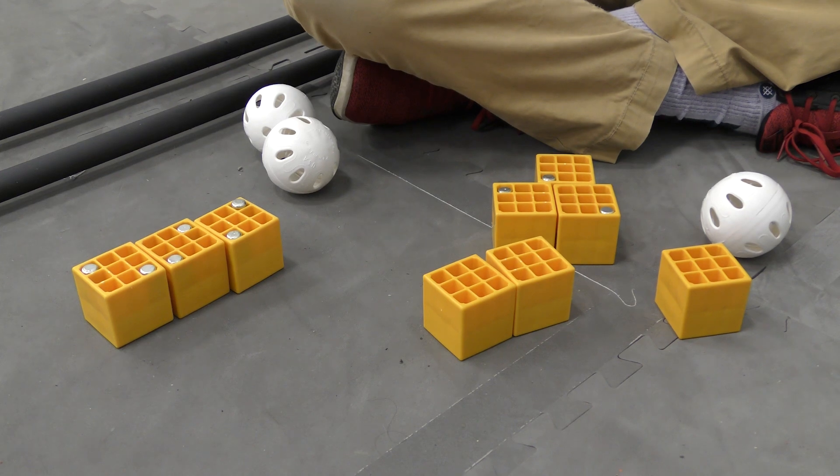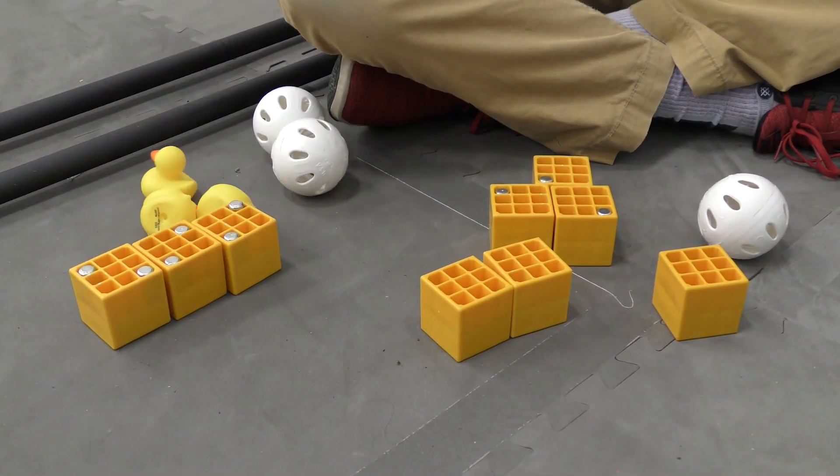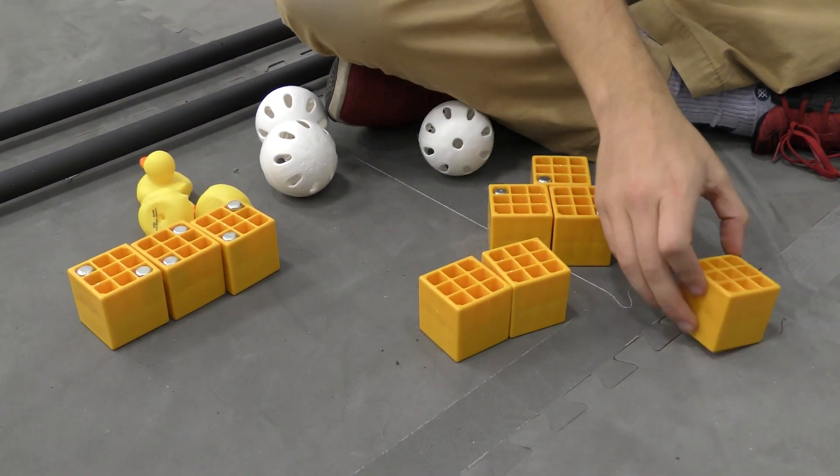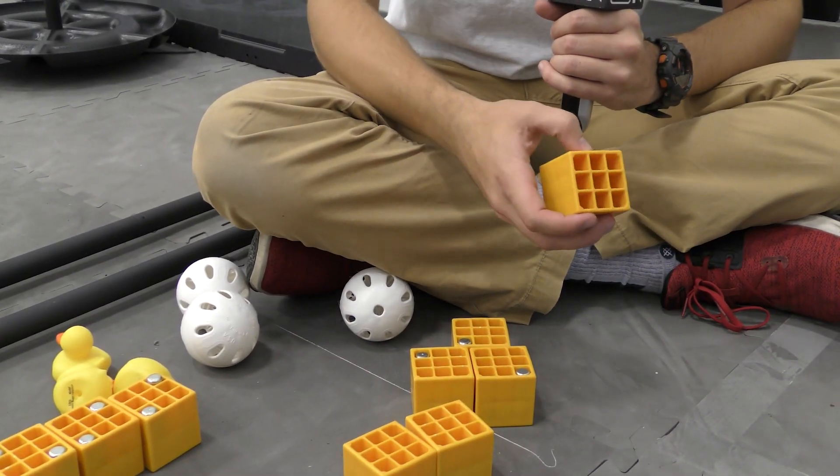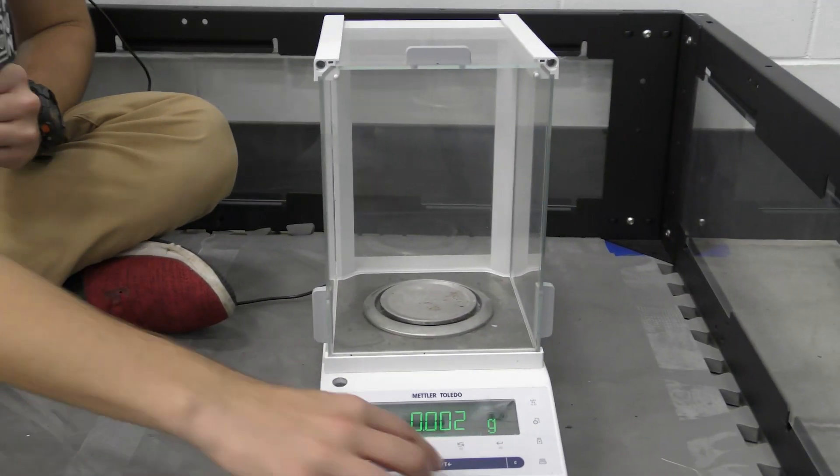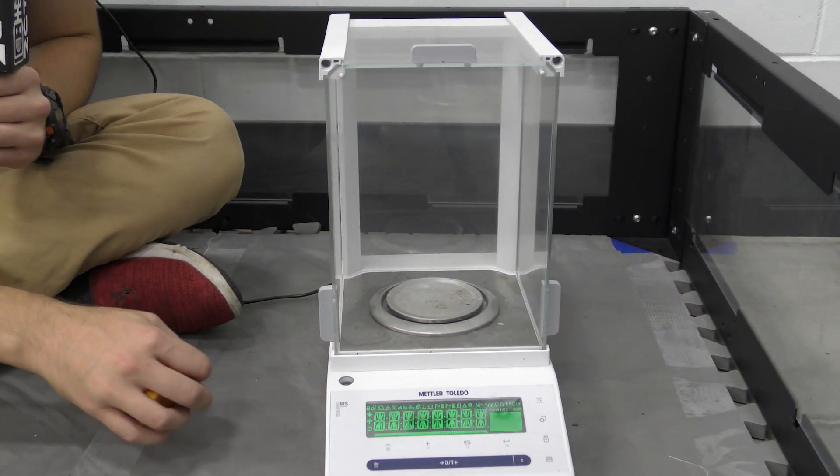So we have all kinds of different freight that we're going to be weighing. First we're going to start off with the cubes with no added weight, so the lightest ones. We'll see how much these weigh. So we'll zero that out real quick.